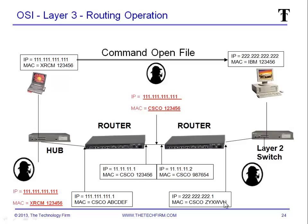Now I should see the MAC address of this router, which is WVU — I've made up these letters, it's just the way I like to do it. But the IP will still be the laptop's. So the IP is the laptop's, but the MAC address is this router's port. And we would see the opposite on the way back.